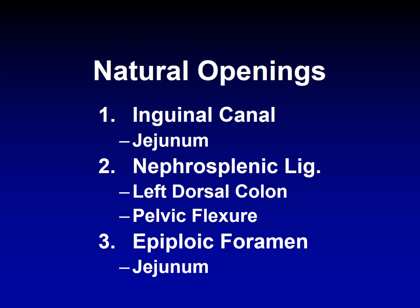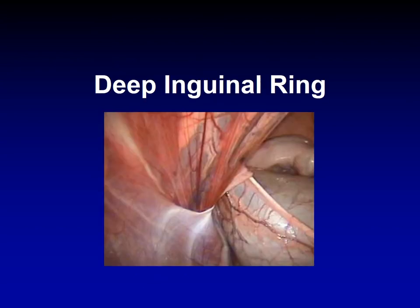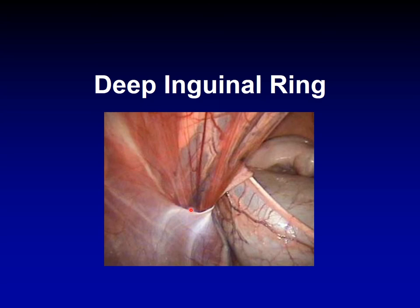Let's talk about the inguinal ring first. This is an endoscopic view of the abdominal cavity showing the deep inguinal ring toward the scrotum and toward the abdominal wall. You can feel the superficial inguinal ring with your hand, but not the deep inguinal ring. The distance between the deep inguinal ring and the superficial inguinal ring is called the inguinal canal.